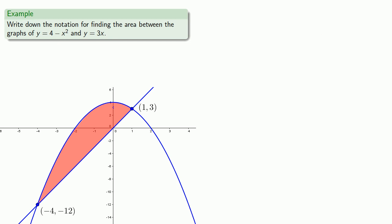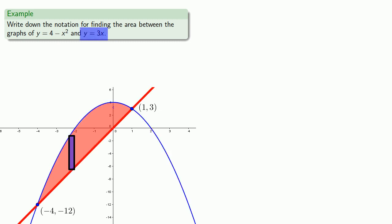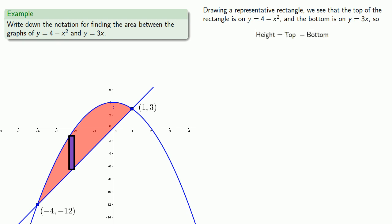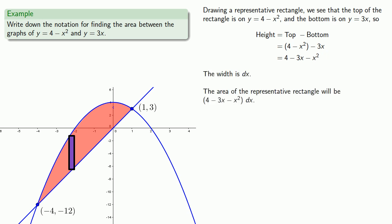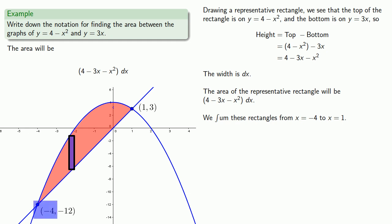Now let's draw a representative rectangle. The top of the rectangle is on y equals 4 minus x squared and the bottom is on y equals 3x. The height, as always, is top minus bottom, which gives a height of 4 minus 3x minus x squared. The width of the rectangle is dx, so the area of this representative rectangle is 4 minus 3x minus x squared times dx. This will be our integrand, and we sum all of these areas from x equals negative 4 to x equals 1, giving us the definite integral.